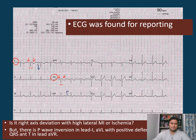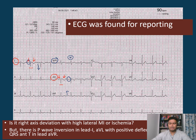The P inversion in lead I actually indicates something else. If you look at lead AVR, it is positive, which is unusual — AVR should have negative deflection of the P, QRS, and T. But here the P seems to be positive or equiphasic, the QRS is positive, and the T is also positive. So AVR is positive, lead I is inverted, and lead AVL is inverted.